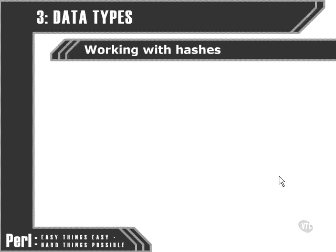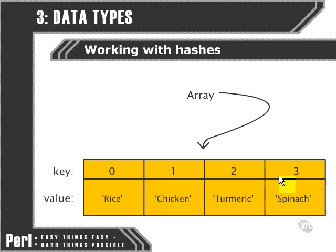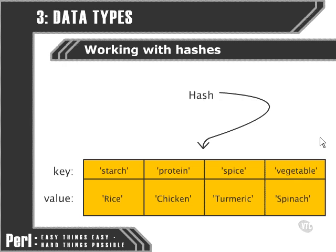Now we've looked at arrays in a bit of detail, let's take a look at another useful data type: the hash. Whereas with an array, each of the elements is divided by using a numeric key — that is 0, 1, 2, 3, 4, and so on — with a hash it's quite different. Instead of using a numeric key, we're able to use a string as a key for each element within the hash.